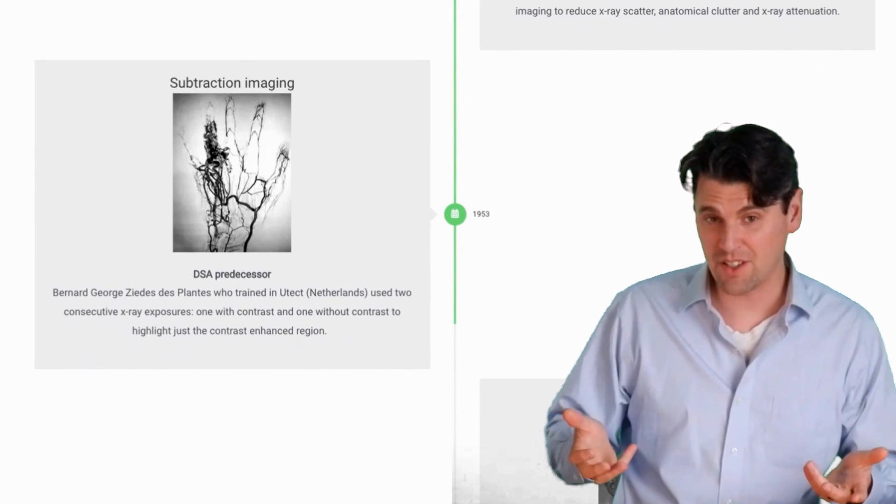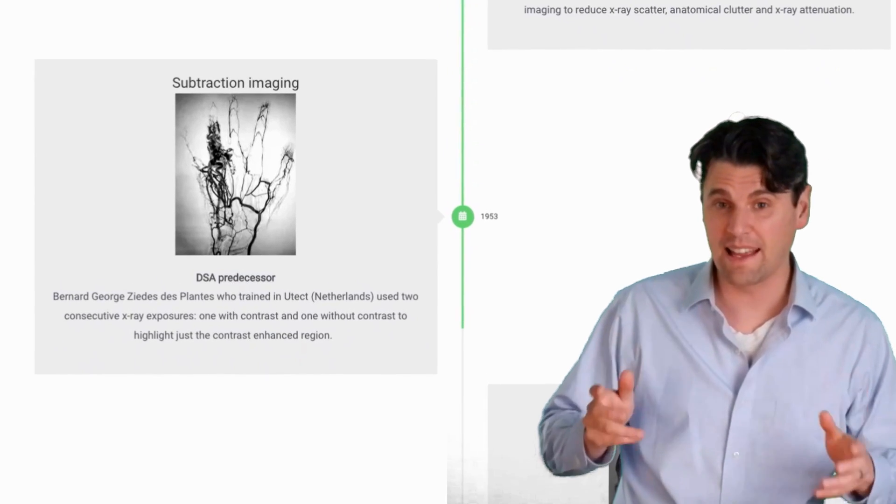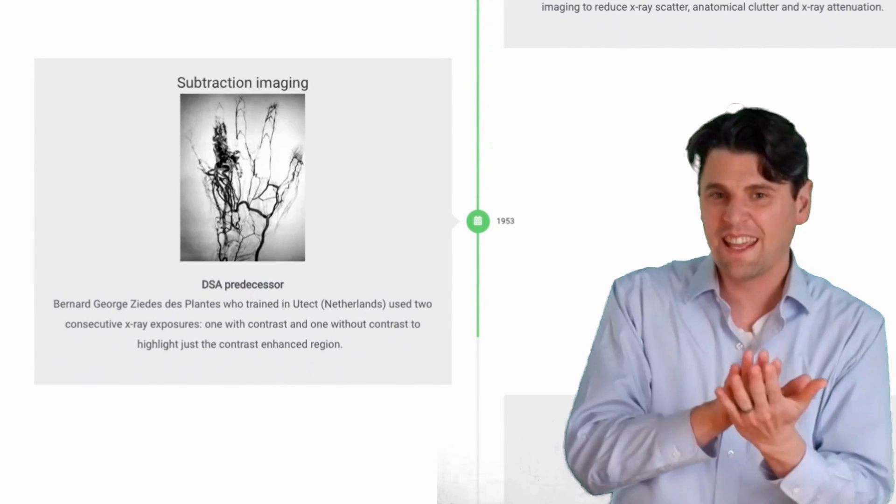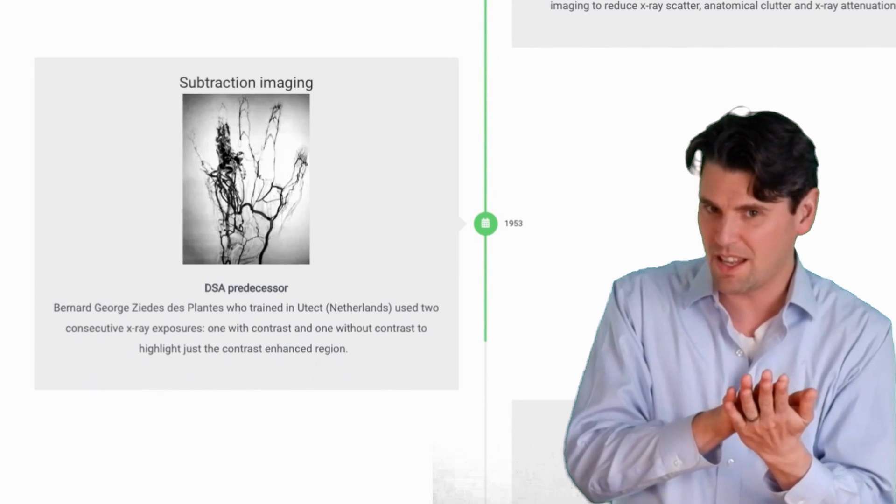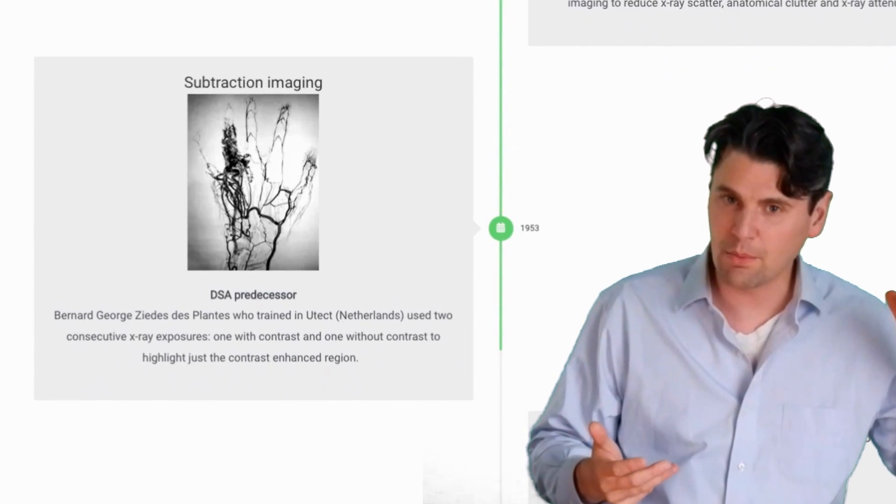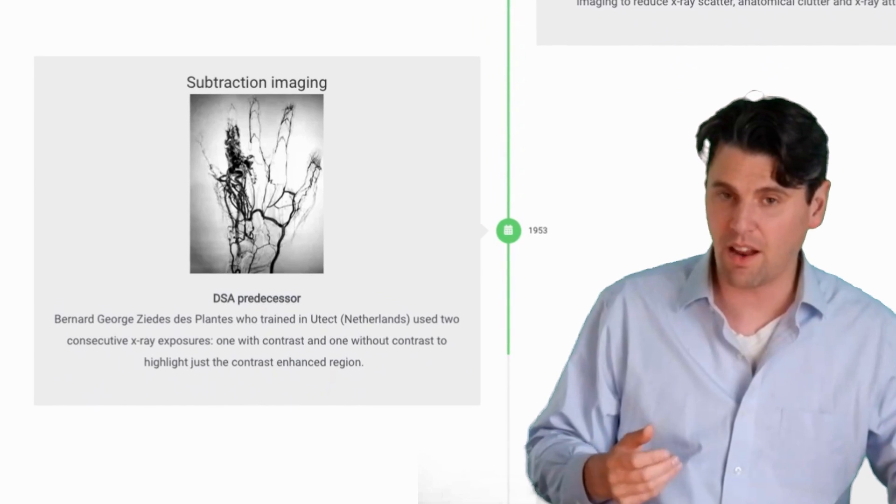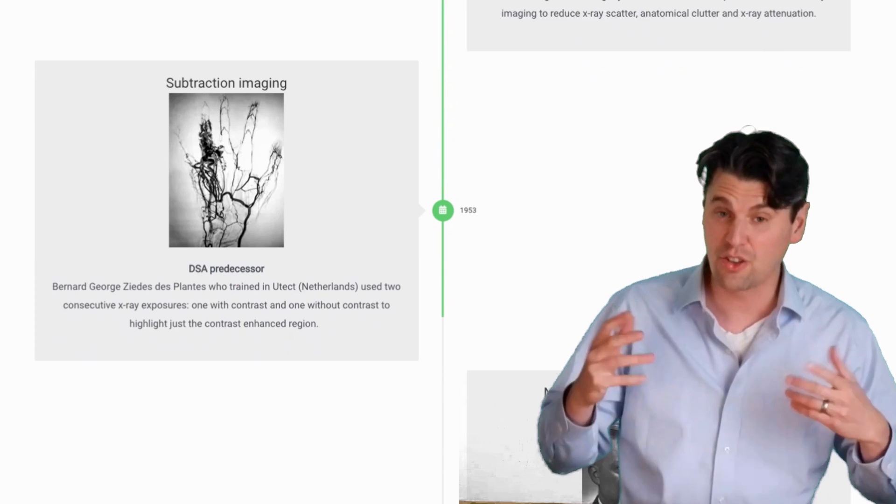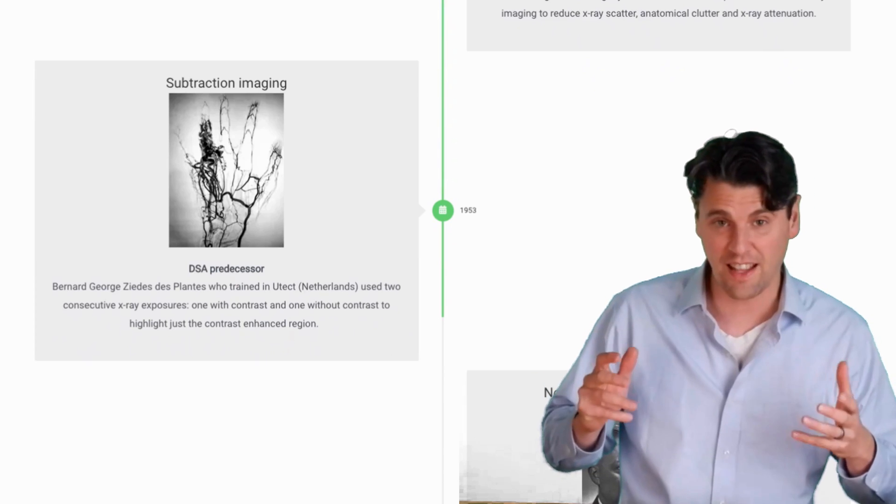In 1953, the first X-ray subtraction imaging was demonstrated by ZD Stepans. So the same person who did tomography earlier, he demonstrated subtraction imaging. In this case, you can see that if you take a subtraction of images after contrast and before contrast, the contrast is going to show a predecessor to modern-day digital subtraction angiography.